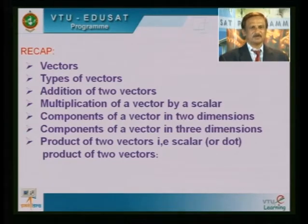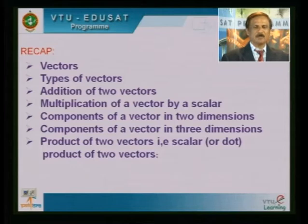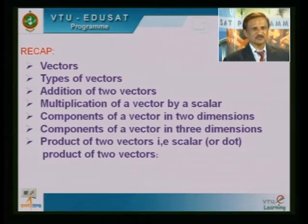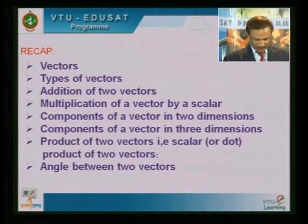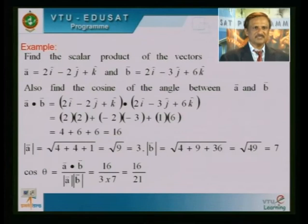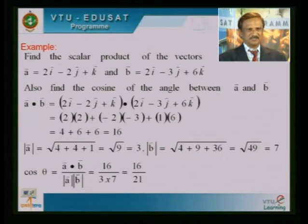I have defined: a and b are any two vectors. How do we define a·b? I think so far we have discussed all these things. Now I want to continue in the same way. I think we have discussed the angle between two vectors also. Now I want to solve one example about the product of two vectors.